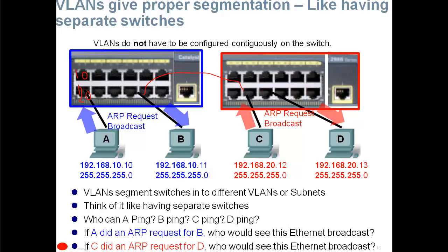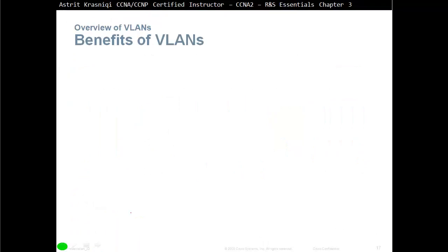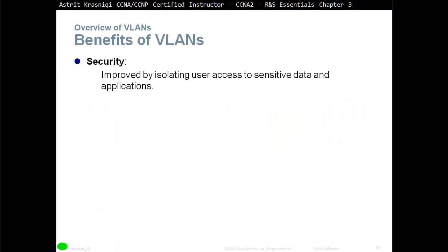ARP — Address Resolution Protocol — is used to resolve an IP address to a MAC address. ARP is a broadcast message: for example, a device sends out 'who has IP address 192.168.10.11?' and PC-B responds with its MAC address.